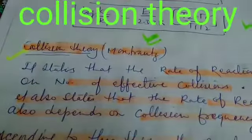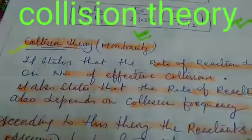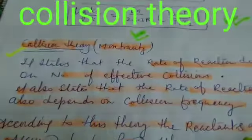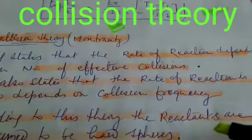The next theory is collision theory, which was proposed by Max Trotz. It states that the rate of reaction depends on the number of effective collisions.